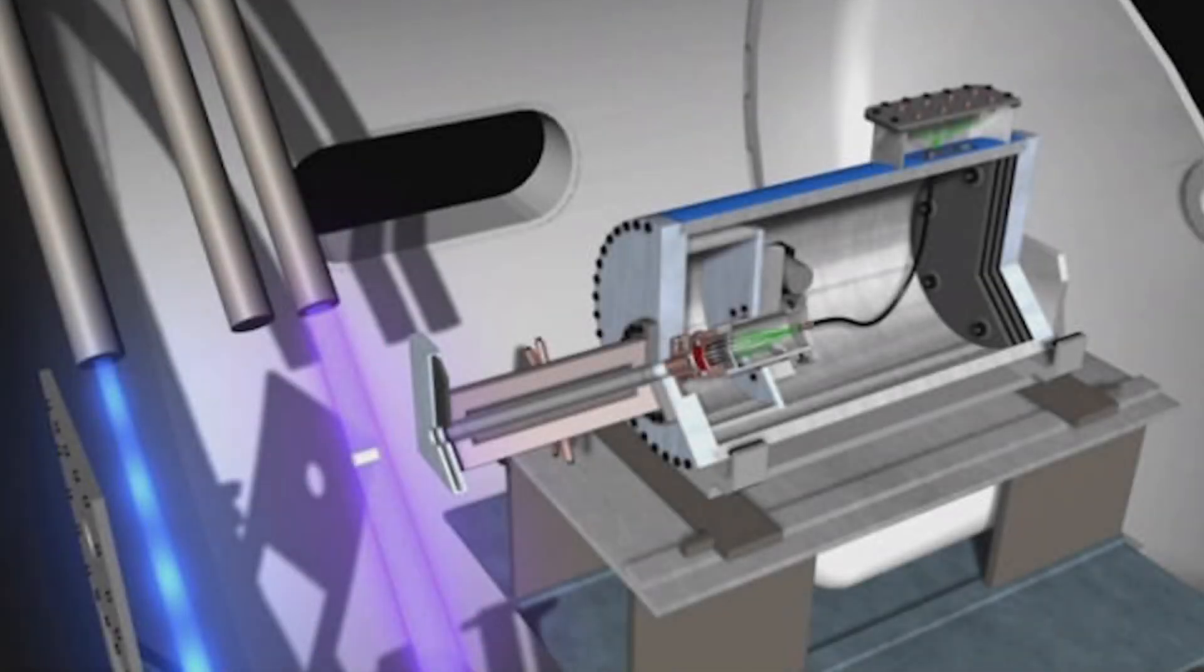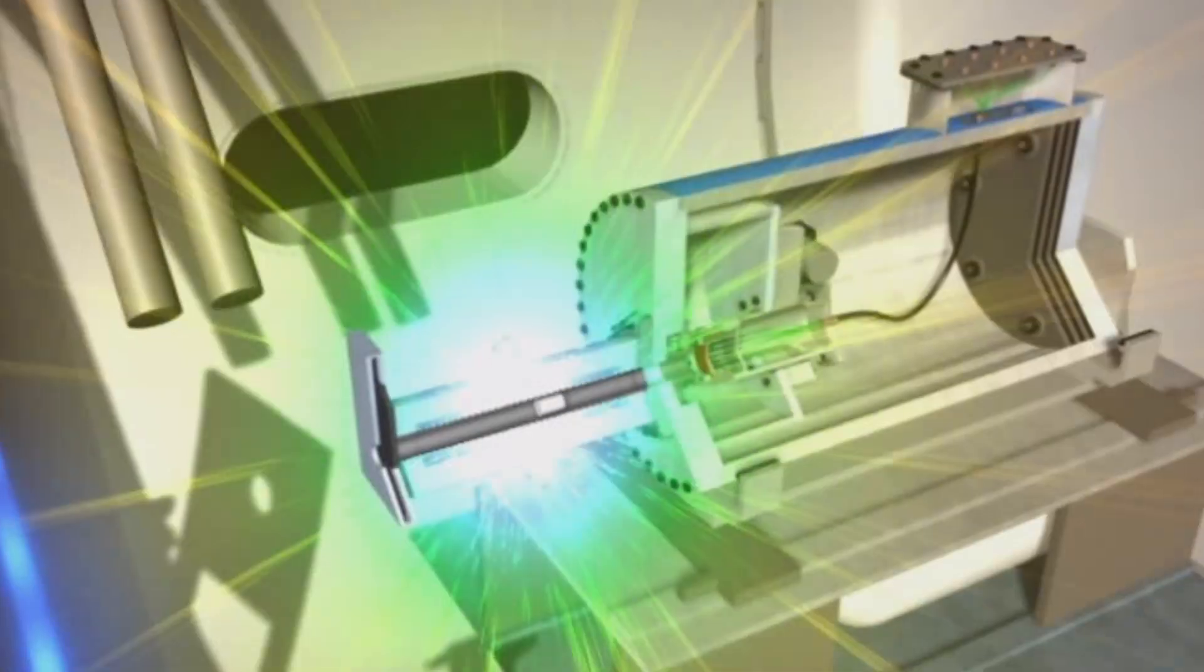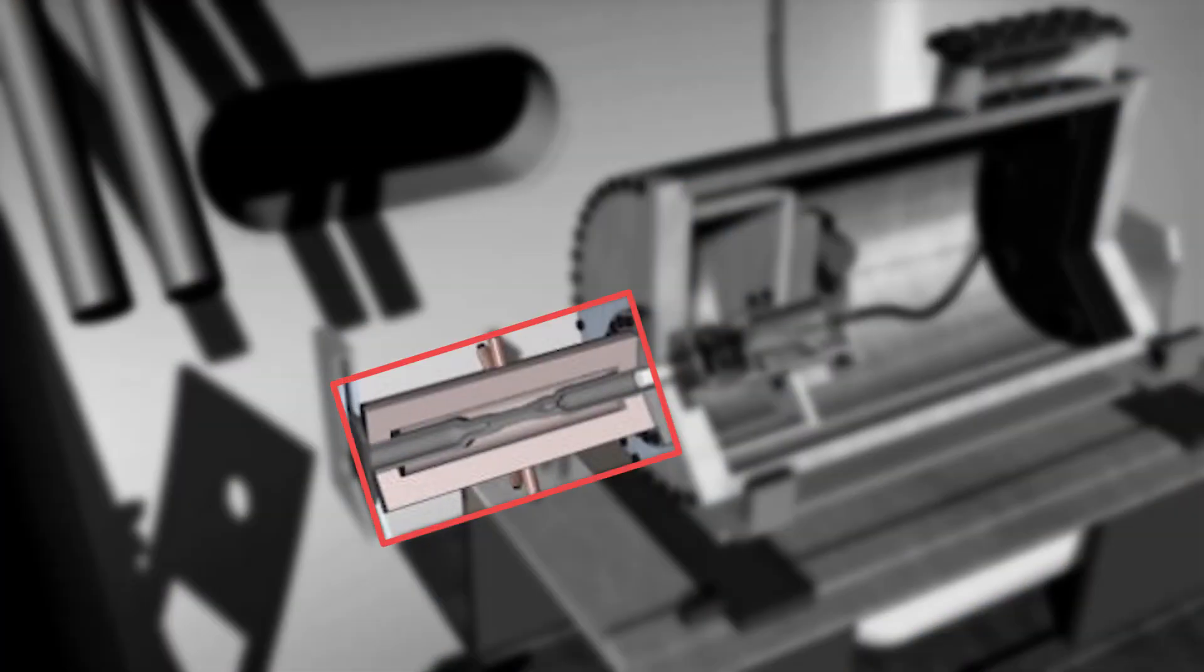The projectile then passes through the ultra-fast closure valve system. This system closes within 80 microseconds to prevent material from escaping. Receiving a signal from the continuous wave x-ray system, twelve detonators ignite a layer of high explosives surrounding a soft aluminum tube. The explosives symmetrically crush the tube, creating a seal and isolating the target material.